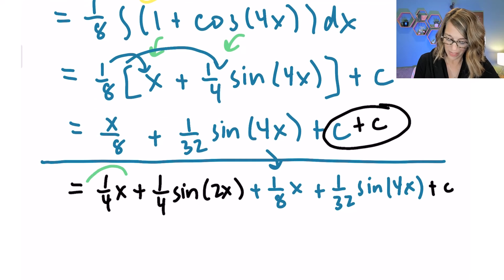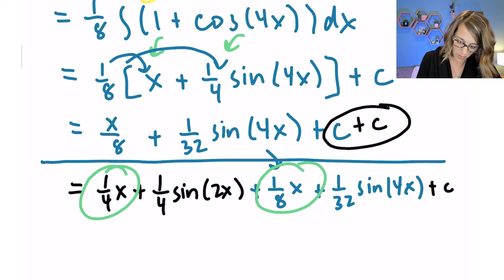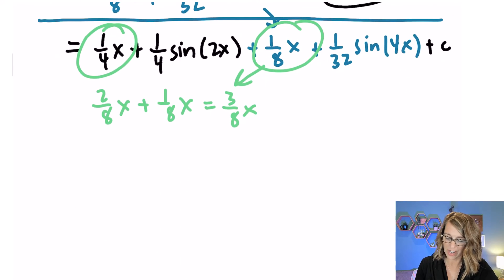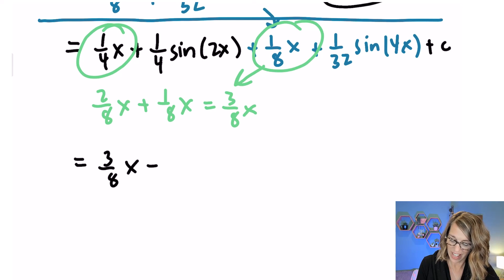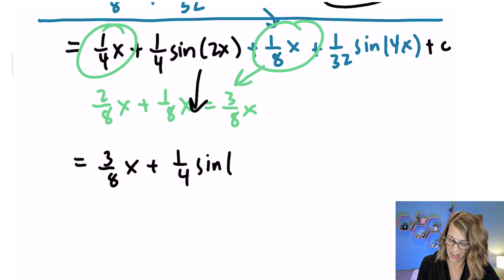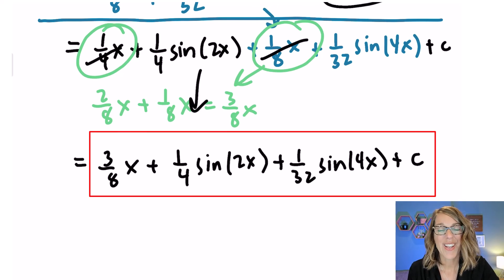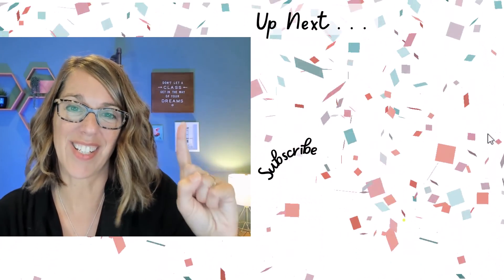There are like terms to combine: 1/4 equals 2/8, so 2/8 x + 1/8 x = 3/8 x. The final answer is: 3/8 x + (1/4)sin(2x) + (1/32)sin(4x) + c.